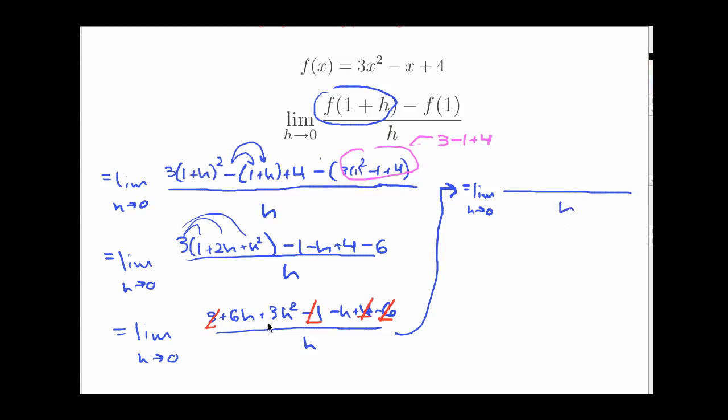I have all this stuff over h. What's left over is I have a 3h² and then I have a 6h - h. That's a plus 5h. All right.